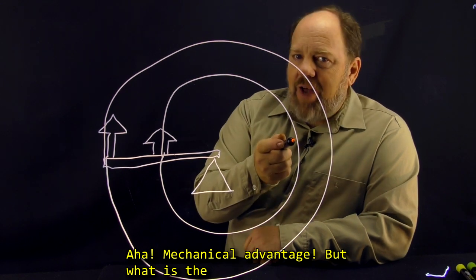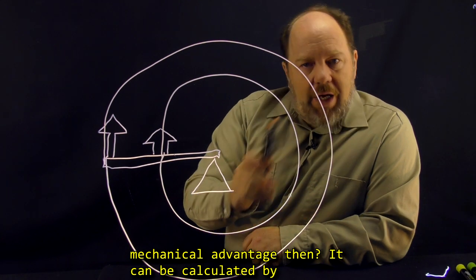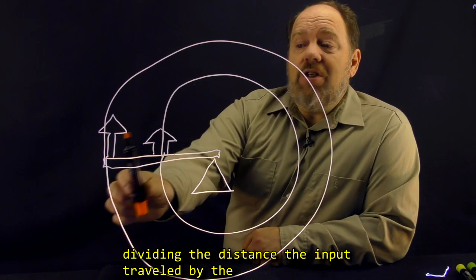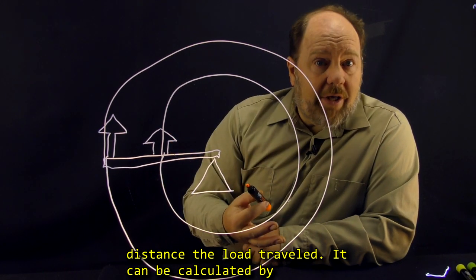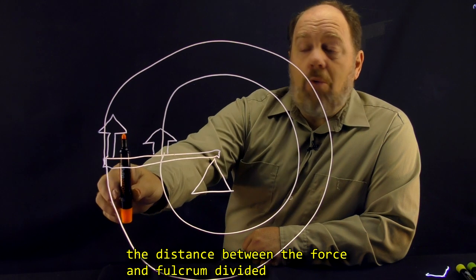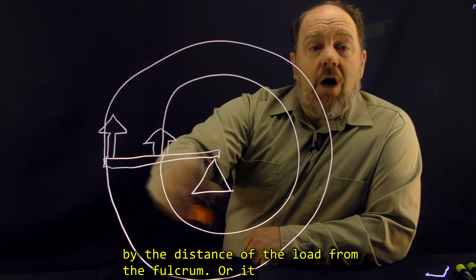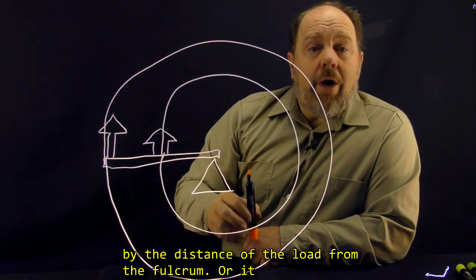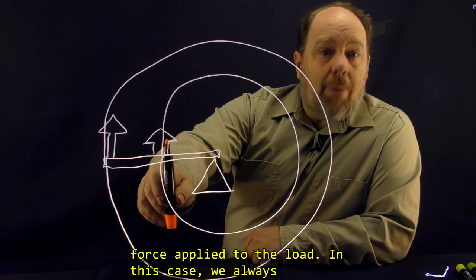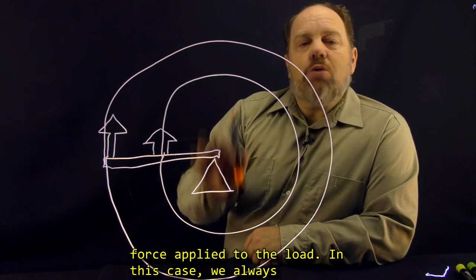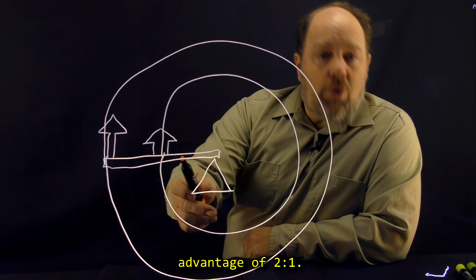Aha! Mechanical advantage! But what is the mechanical advantage then? It can be calculated by dividing the distance the input travelled by the distance the load travelled. It can be calculated by the distance between the force and the fulcrum divided by the distance of the load from the fulcrum. Or it can be calculated by the input force divided by the force applied to the load. In this case we always come to the same conclusion. We have a mechanical advantage of 2 to 1.